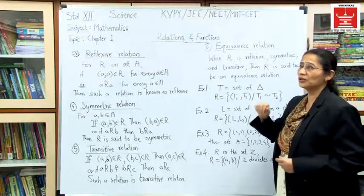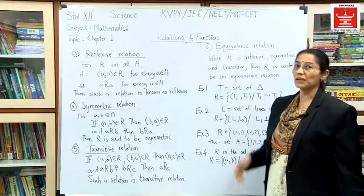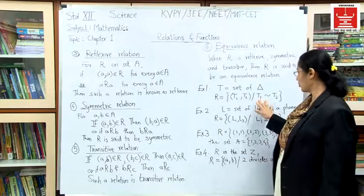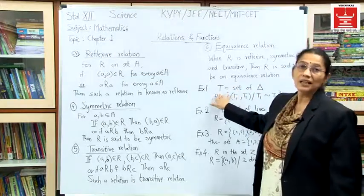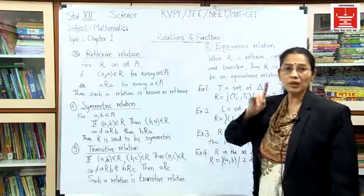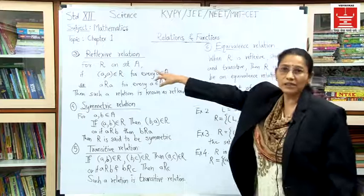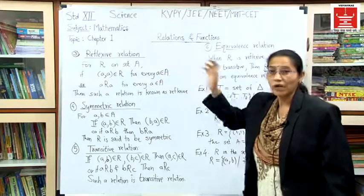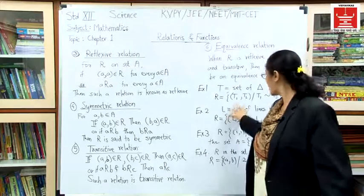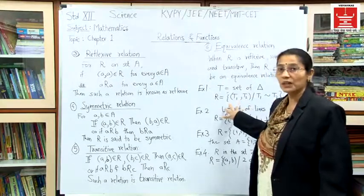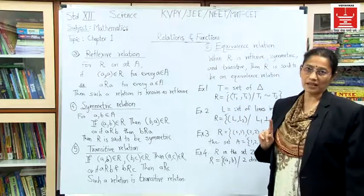Every triangle in the set T is similar to itself. Since it is related to itself, reflexivity holds — because for every element in the set this must hold. So every triangle is similar to itself and therefore this particular relation is reflexive.